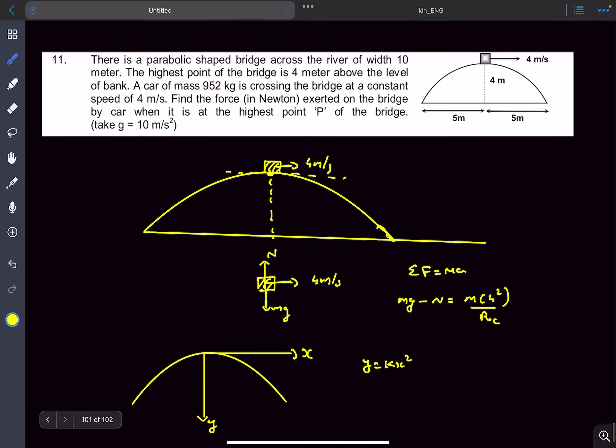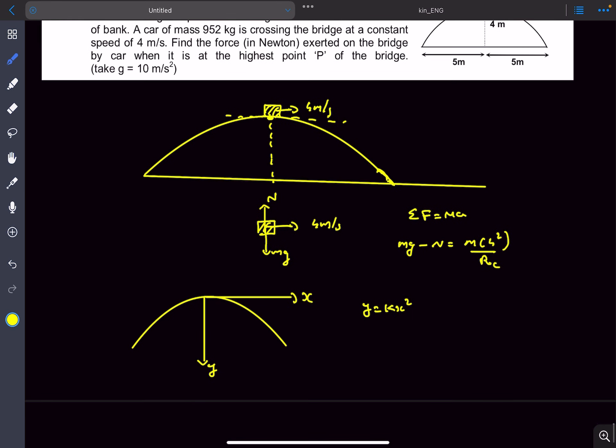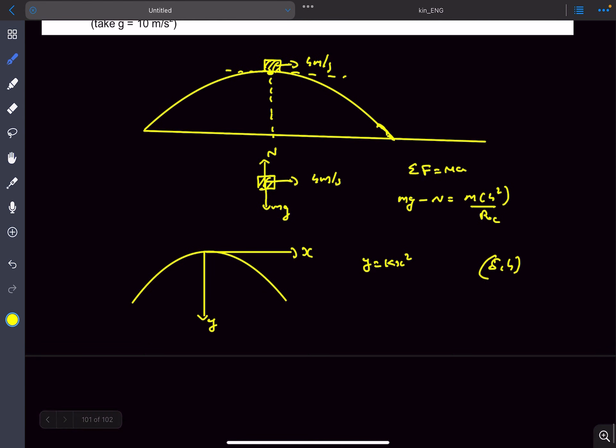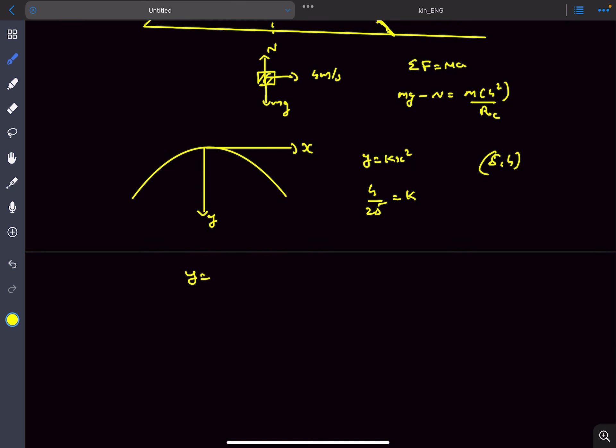Now it's given that the parabola passes through the coordinate 5 comma 4. If I substitute it into this equation, we'll get 4 by 25 as k. So our equation of the parabola is y equals 4 by 25 x squared.